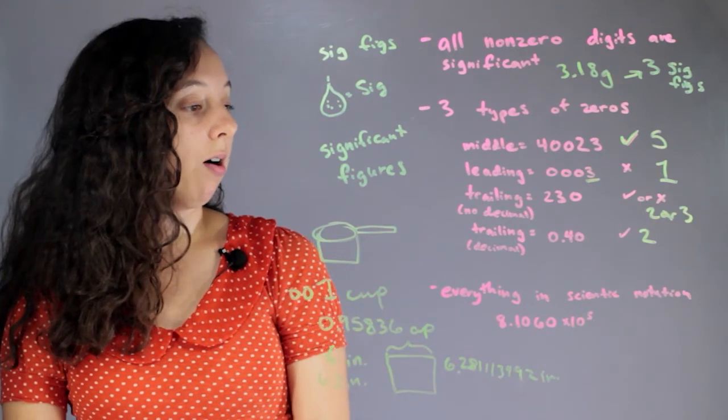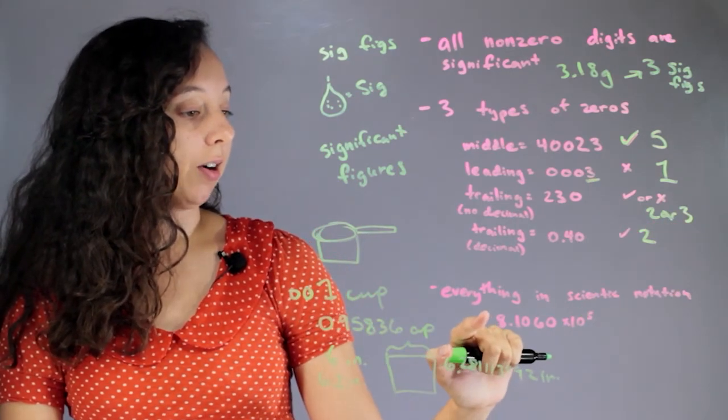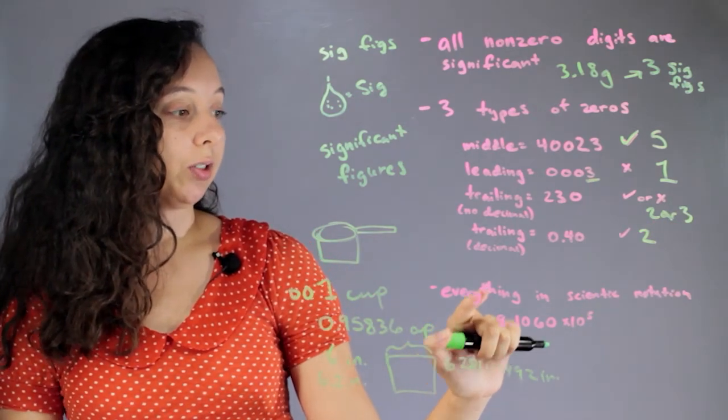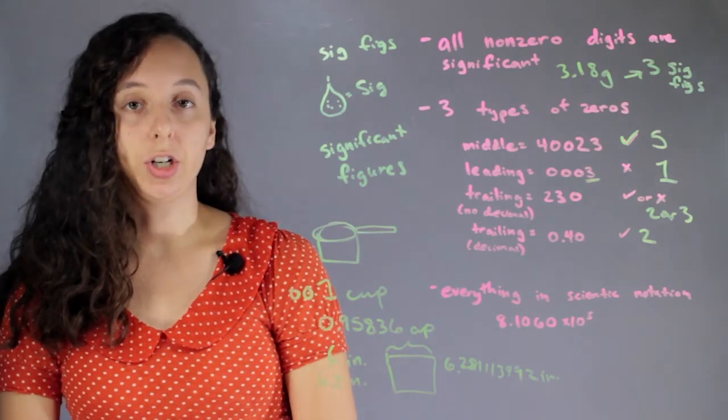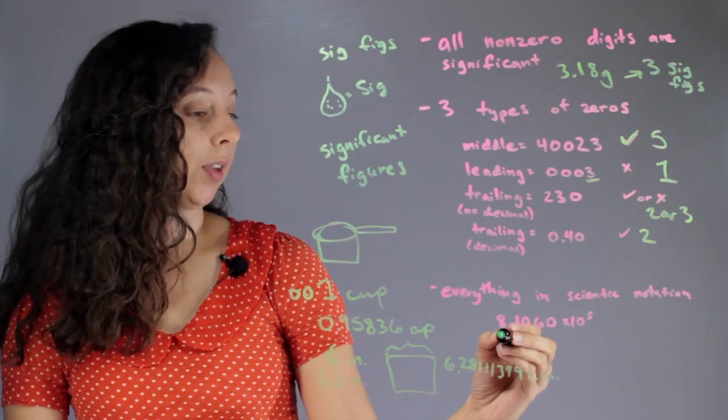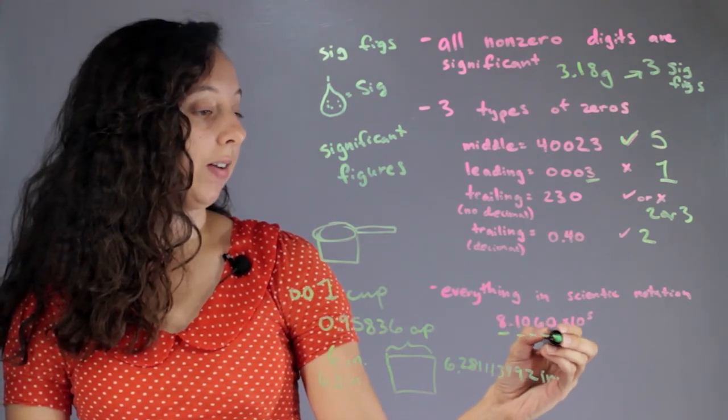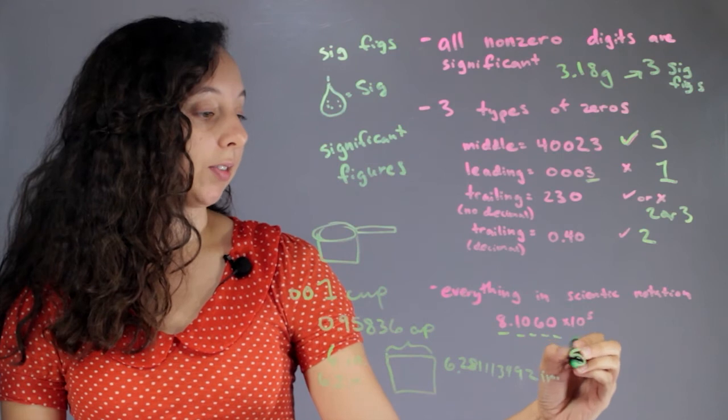So now, to make it clearer, that's kind of why scientists use scientific notation. One of the reasons is because everything in scientific notation is definitely a sig fig. So this 1, 2, 3, 4, 5 has 5 sig figs.